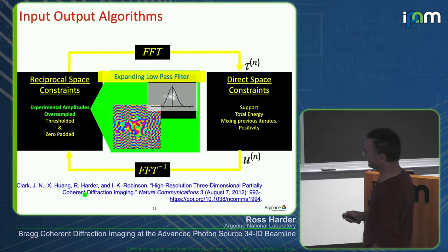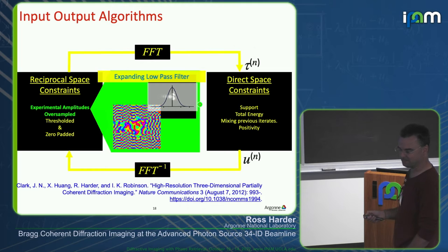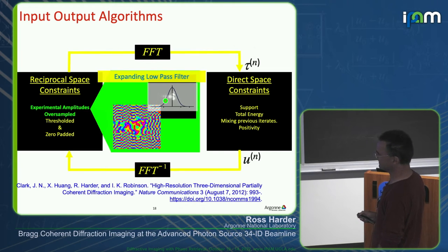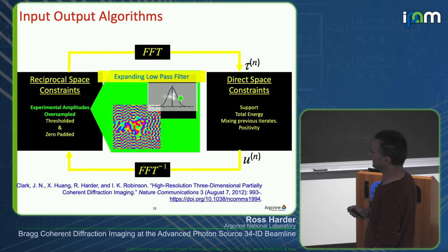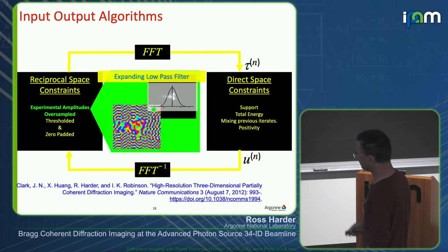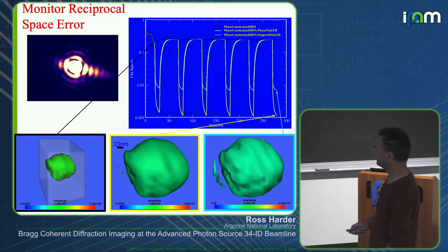Jesse also added an expanding low-pass filter: you start phase retrieval with a low-pass filtered data set — multiply it by a Gaussian — and phase that. Then every iteration you make the Gaussian a little wider, doing this for maybe half of the total iterations. This improves robustness because the dim signals at high spatial frequencies are higher noise, and you don't want them contributing when you don't yet know what the image is. Slowly increasing the data included in the algorithm improves convergence rate. That's implemented with a few more parameters.